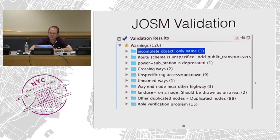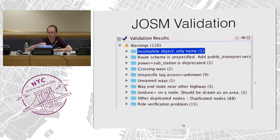Talking about editors, JOSM is the only editor that has a really nice in-editor validation system. All of the data that you've downloaded and all of your edits — you can hit validation at any time and see a series of warnings and errors. You can open each of those folders, go into each error, select the error, and zoom to your selection. If you know how to fix it, you can go off and fix it.